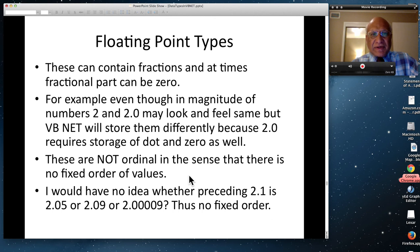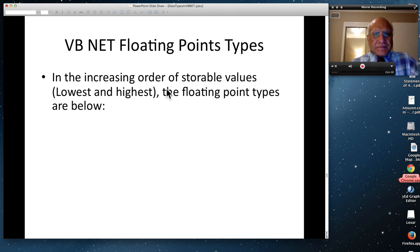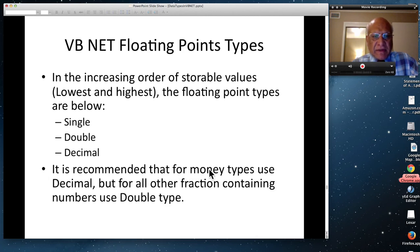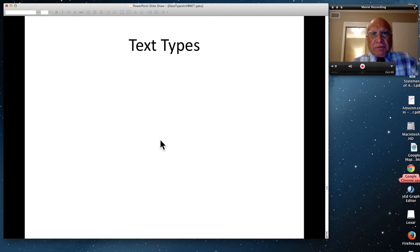Now the VB.NET floating point types are these. And these are in the increasing order of storable values. Lowest here and the highest at the bottom. So you have something called single precision, single. Double precision. So this takes twice the RAM of this one. And the decimal. So there are three types. And it is recommended that for money types, you use decimal because this has more precision, obviously. But for all other fraction containing numbers type, you use double. So I recommend this for every non-money application and this for money application. That's my recommendation.